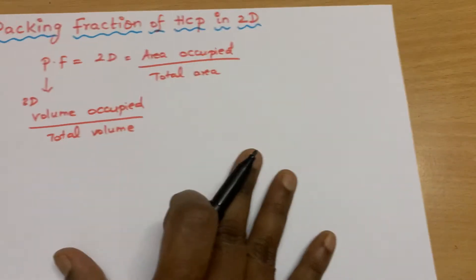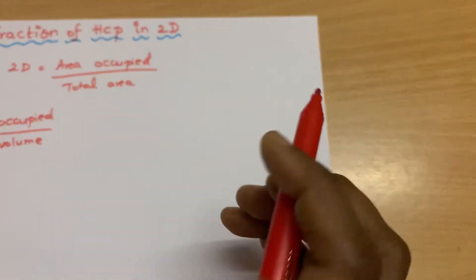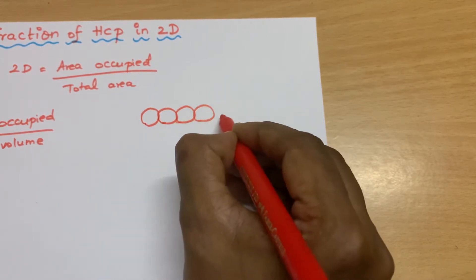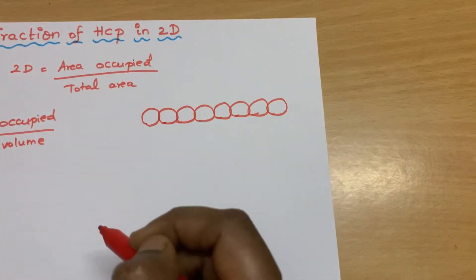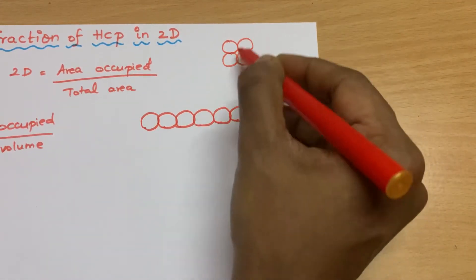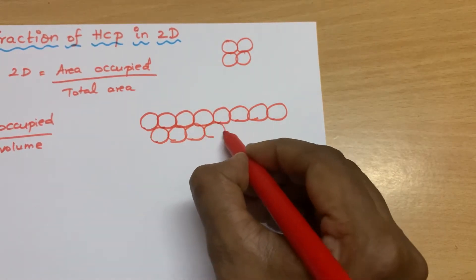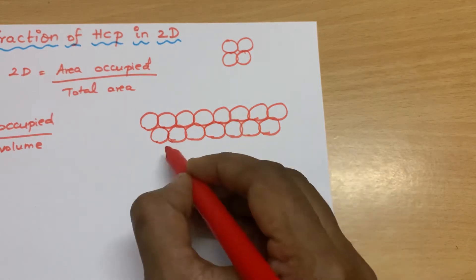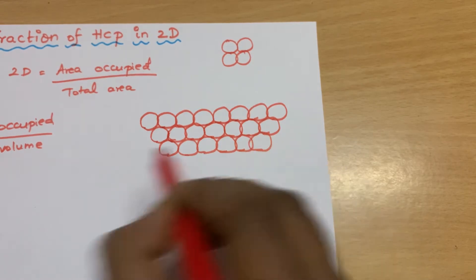Now coming to the hexagonal closed packing system — how the atoms will be placed. First, in one dimension we arrange atoms like this. In two dimensions, the next layer has to be arranged differently. If I arrange it straight, that is square packing. For HCP, I have to arrange it offset — like how vendors arrange fruits on their cart.